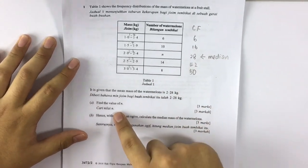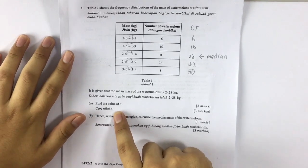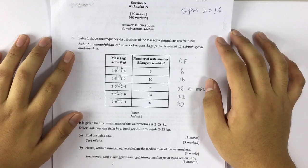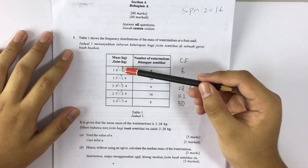From the table and information, it is given that the mean mass of the watermelons is 2.8 kg. Part A, find the value of n. We know that this table is group data. For group data, we need to find n, so we've got to determine its midpoint.